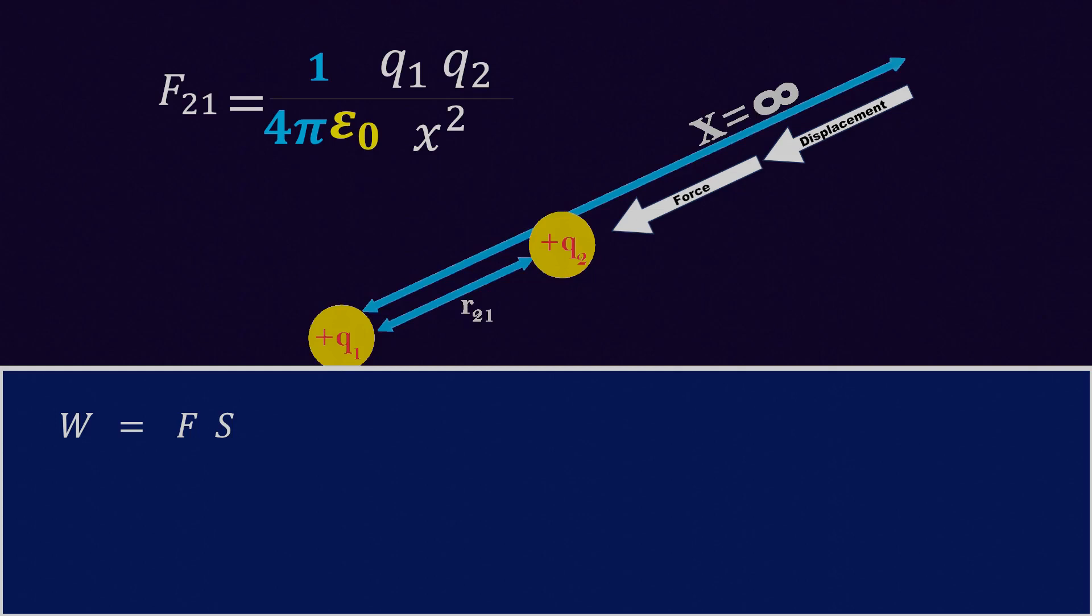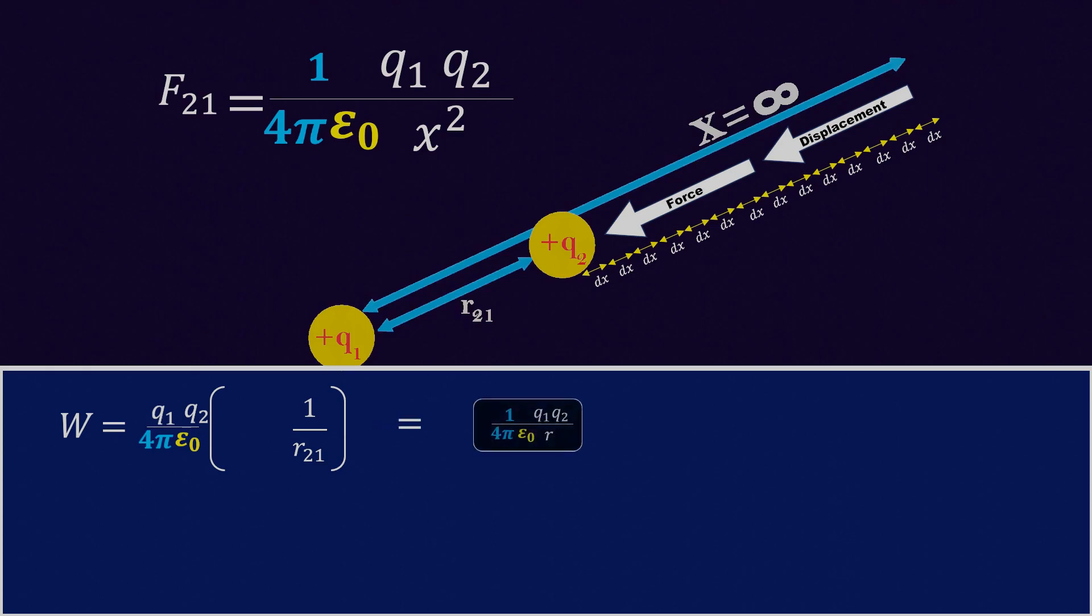Since we are moving the charge very slowly with a displacement of dx, we can consider s as dx. Let's replace the force f with Coulomb force f21 and integrate it between r21 and infinity. We know that q1, q2 divided by 4 pi epsilon naught is a constant. And the integration of 1 upon x square is minus 1 upon x. And we can bring the minus sign outside. Using the upper and lower limits, we get 1 upon infinity minus 1 upon r21, where 1 upon infinity is 0. So we are left with 1 upon r21 and the minus sign taken outside will become positive. Finally, we have the equation for work done from infinity to r is equal to 1 upon 4 pi epsilon naught q1 q2 divided by r.